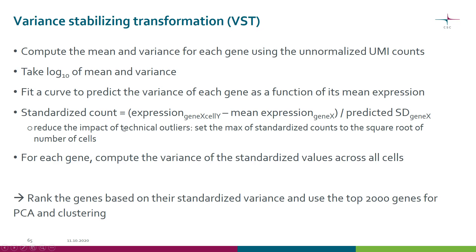There are always technical outliers, so we want to reduce the impact of those. We do that by setting the maximum value to the square root of the total number of cells. Then finally, using these standardized counts, we compute the variance of the standardized values across all the cells. This standardized variance is what we use when we rank the genes. By default, we take the top 2000 genes for the further steps — for PCA.